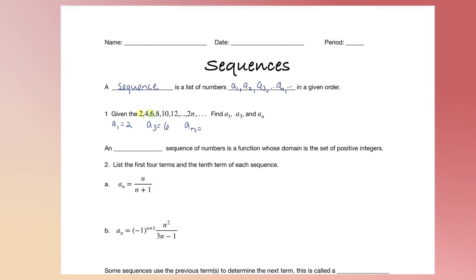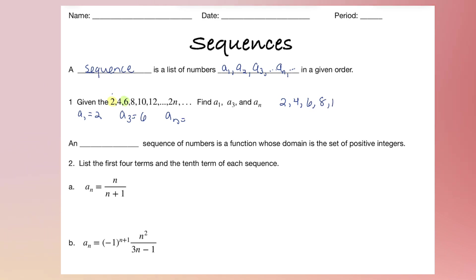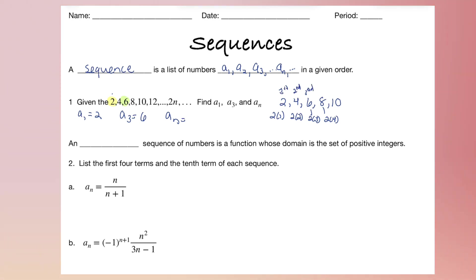A sub n is the nth term in the sequence, which would be 2n. The nth term usually gives you the formula for computing all the terms in the sequence. If 2n is not given to you, you can look at the pattern to figure out how to get from one term to the next. Notice: the term number times 2 gives the value, so A sub n equals 2 times n.